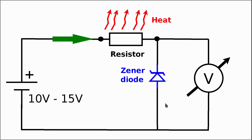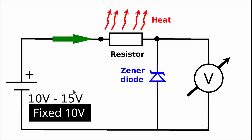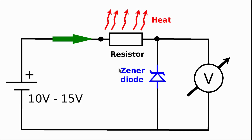In the previous video we started with this simple circuit and changed the input voltage. Today we will use the same circuit, however we will not change the input voltage — it will stay fixed at 10V DC. Instead of adjusting the input voltage, today we will play with the temperature of the zener diode and see how this affects the output voltage as a function of temperature.